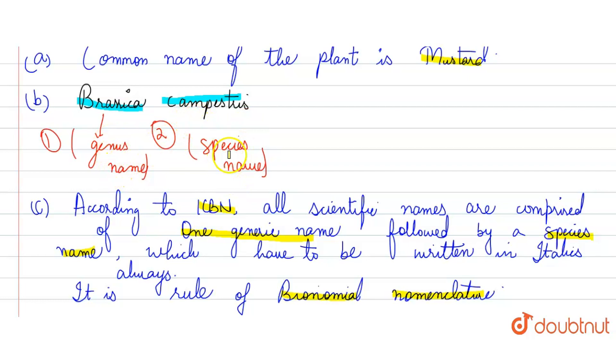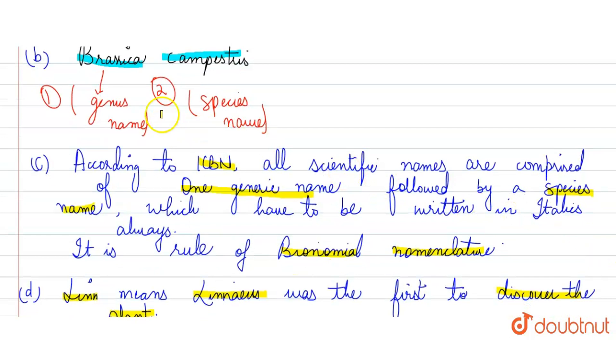Third part was, why are they written in italics? So, according to ICBN, all of our scientific names have a genus and a species name. And we write them in italics, because this is the rule of binomial nomenclature.